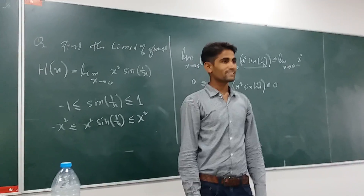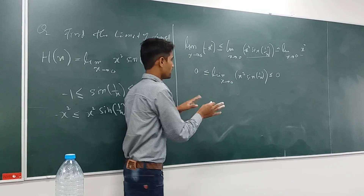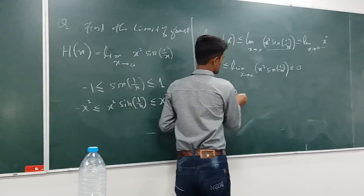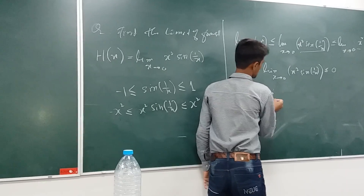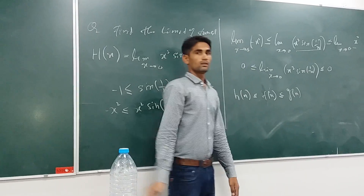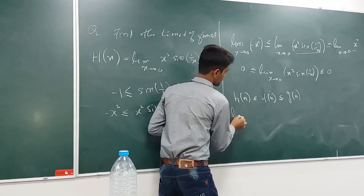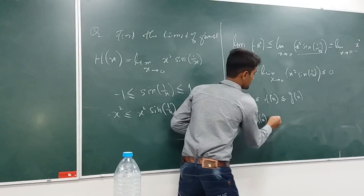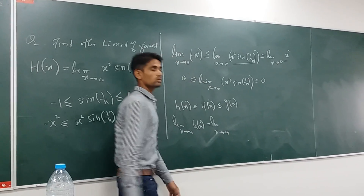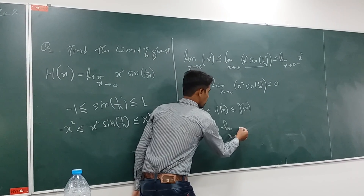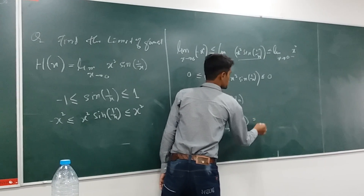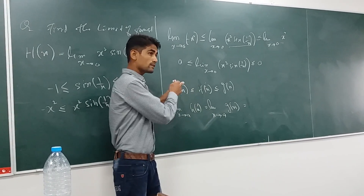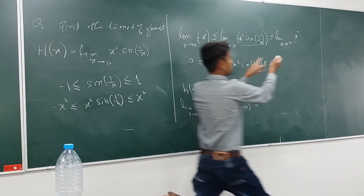This is the sandwich theorem. If we have given that H of x is less than or equal to F of x, and F of x is less than or equal to G of x, and if the limit of H of x and the limit of G of x are equal, then the limit of F of x is equal to that same value. You can see from above that the limit of this side is equal to 0 and also this side is equal to 0 — both sides are equal.